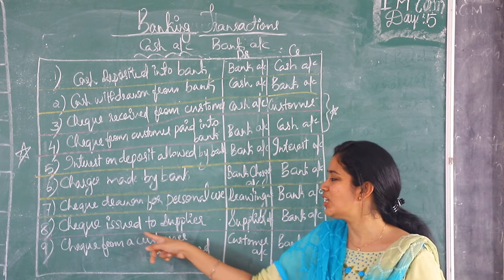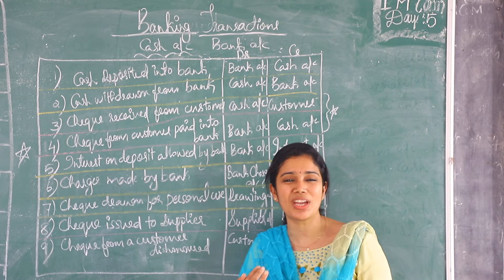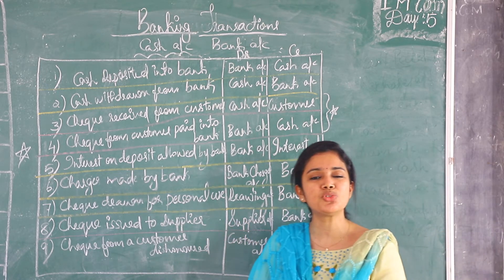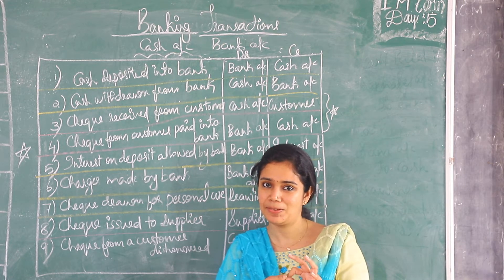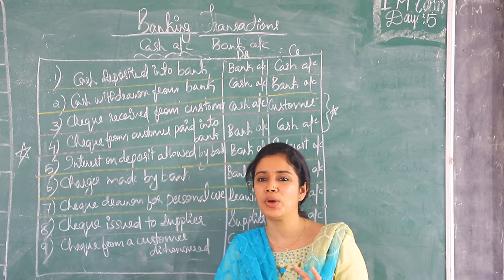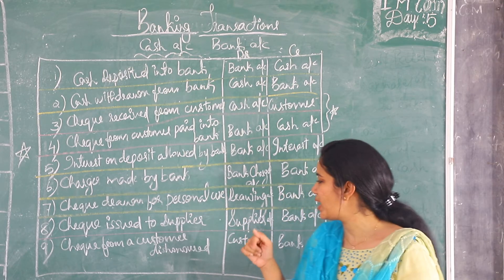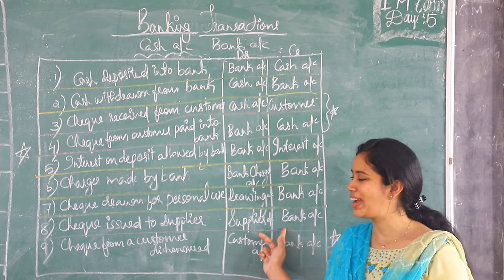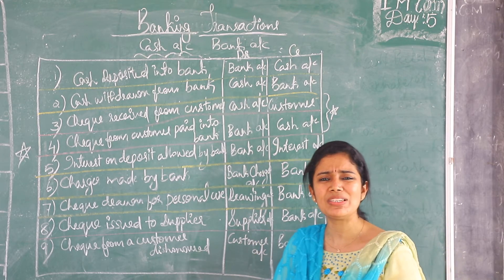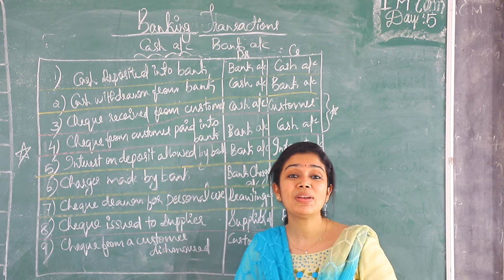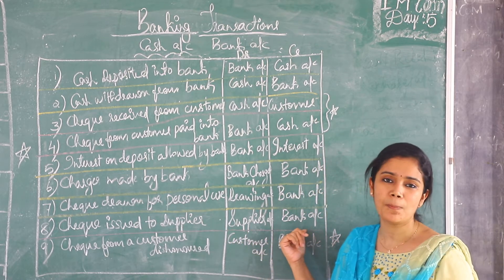It is a very important entry. Next is check issued to supplier. Just like we give cash to a supplier, we can issue a check to the supplier. When a check is issued to the supplier, the two aspects are bank account and the supplier. The amount available in the bank account decreases, so we credit bank account. The supplier receives the cash, so debit the receiver — supplier is to be debited. The entry is: supplier account debit to bank account.